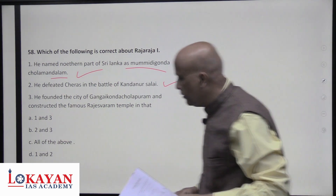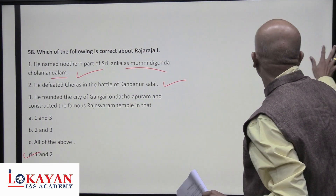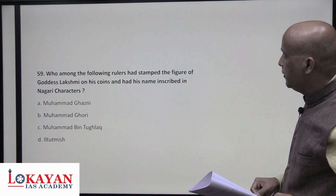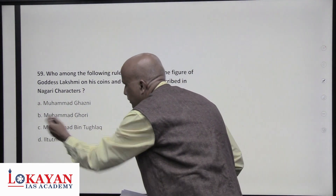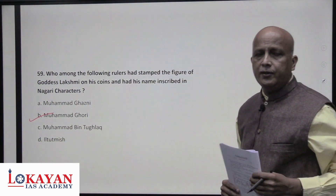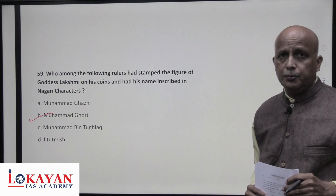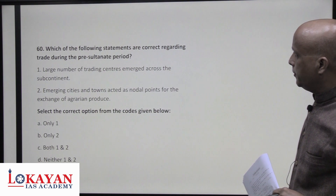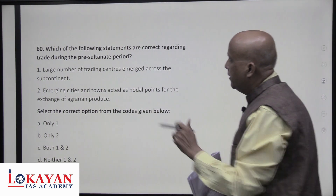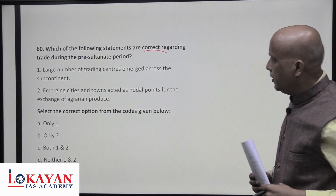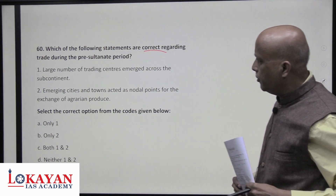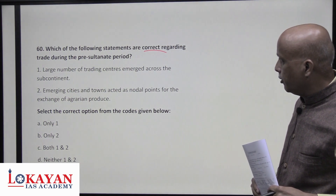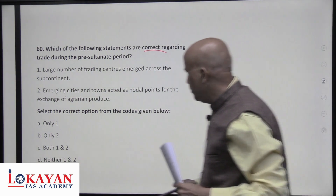Muhammad Ghori, to show his Indianization, inscribed the figure of goddess Lakshmi on his coins and wrote his name in Nagari script — correct. Regarding trade during the pre-Sultanate period: a large number of trading centers emerged across the subcontinent. During the medieval period a lot of trading began again, with emerging cities and towns acting as nodal points for the exchange of agrarian produce. Both statements one and two are correct.